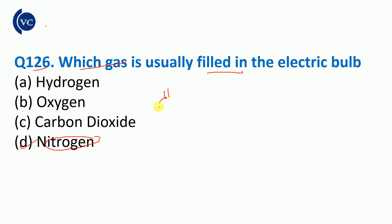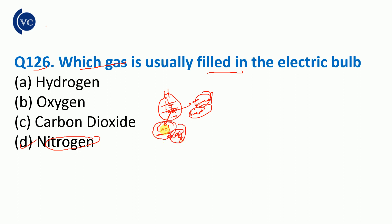If the electric bulb is filled with a filament, it is made of tungsten. The tungsten gets heated when electricity passes through. Nitrogen will not react with the heated filament. Nitrogen and argon are added so that the nitrogen prevents the tungsten from reacting, as tungsten cannot react with nitrogen.